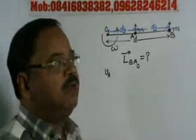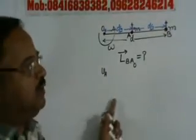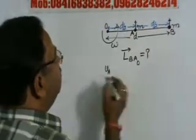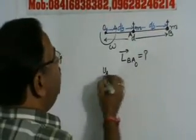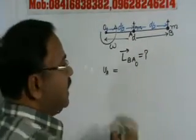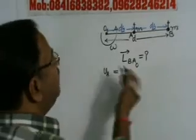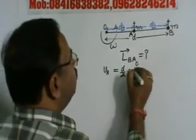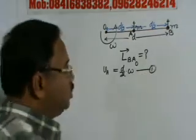The velocity of A with respect to O, linear velocity, this is VAO. So, this will be equal to R into omega, R into omega, and of course R is equal to D by 2, so this is D by 2 omega.